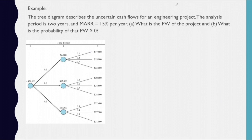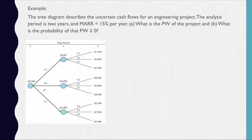For the second example, the tree diagram describes the uncertain cash flows for an engineering project. The analysis period is 2 years, the MARR is 15%. What is the present worth of the project? And part B: what is the probability that the present worth will be greater than or equal to 0? As you can see in the diagram, there are a total of 9 possible outcomes. At year 0, we are given 3 chances: 20%, 60%, and 20%. At year 1, the first chance is further divided into 3 chances, and the same goes for the other outcomes at the end of year 1.